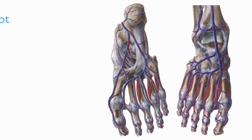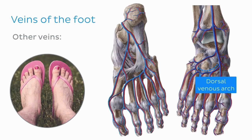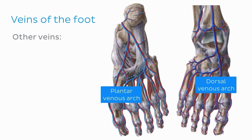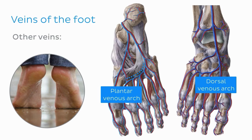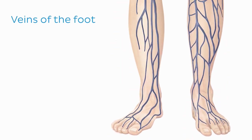Other veins found in the foot include the dorsal venous arch of the foot, which receives the metatarsal veins and is relatively easy to palpate and visualize on a bare foot, and the plantar venous arch of the foot, which is formed by the superficial veins of the sole and accompanies the arterial plantar arch. The arteries of the foot are accompanied by veins of the same name, even for the superficial veins.